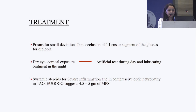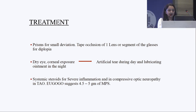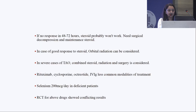For early cases of TAO with small deviation, we can prescribe prisms. Dry eye and corneal exposure must be managed. Depending on the VISA staging and CAS classification, we can start systemic steroids for severe inflammation and compressive optic neuropathy. In severe cases, combined therapy of steroid, radiation, and surgery may be considered. Immunotherapy — rituximab, cyclosporine, octreotide, IVIG — is reserved for resistant cases.